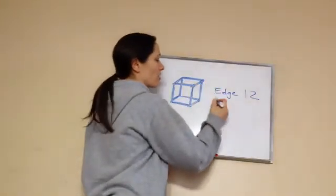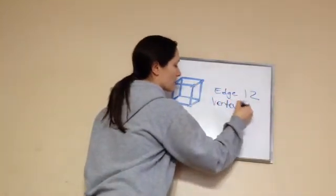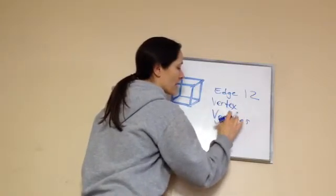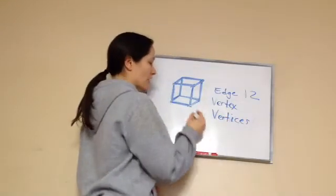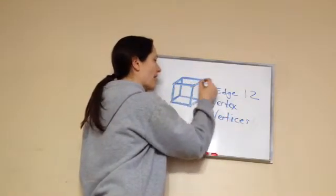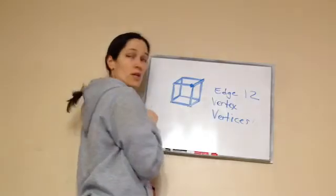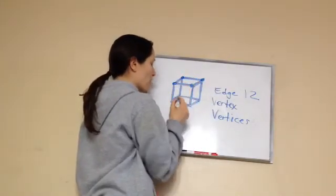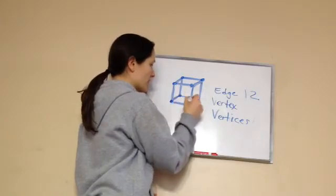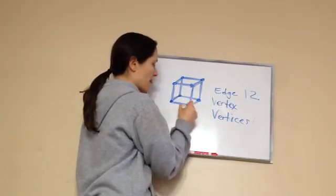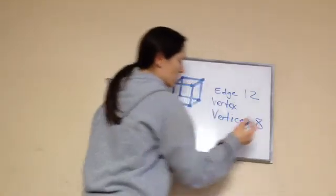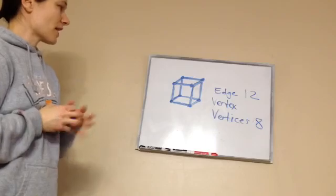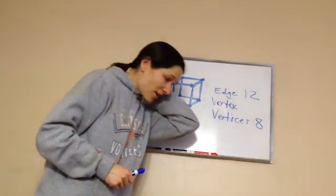The last thing I want to teach you is called a vertex, and the plural form of that is vertices. A vertex is where two edges meet together. Counting them — one, two, three, four, five, six, seven, eight — there are eight vertices on this cube. And so that is lesson 83.